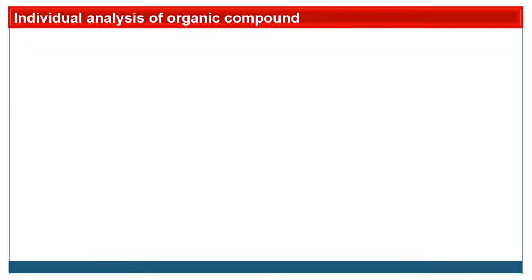After type determination, do the individual analysis of each compound — that is Step 3, the preliminary test. Preliminary tests are primary tests to be carried out within a few minutes. These give a broad idea of what is present in the organic compound and its composition, but they are not confirmed — just preliminary ideas. Carry out these tests within 5 to 10 minutes in the laboratory.